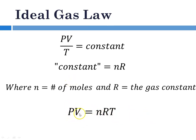P is pressure, V is volume, n is the number of moles, T is temperature, and R is this so-called gas constant.